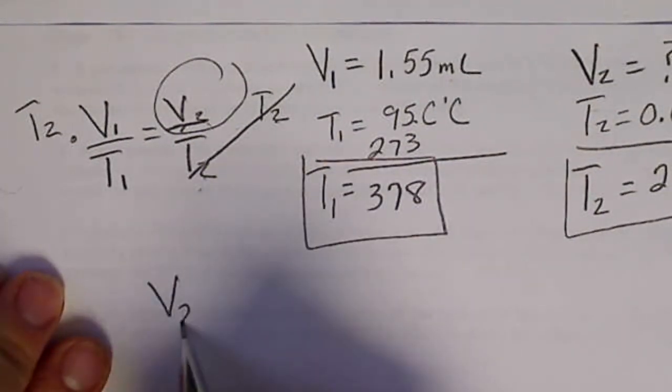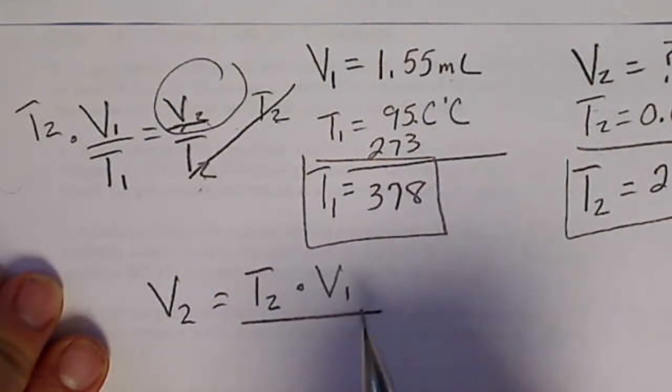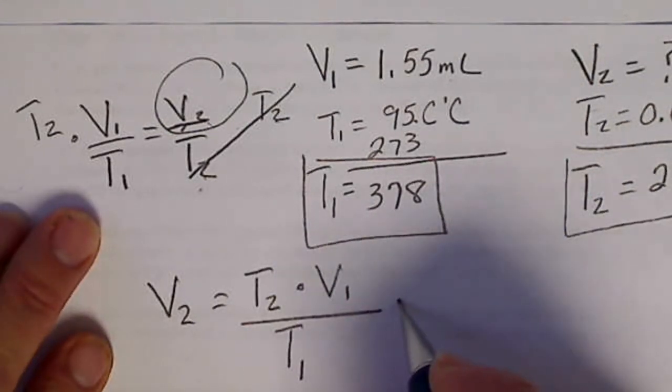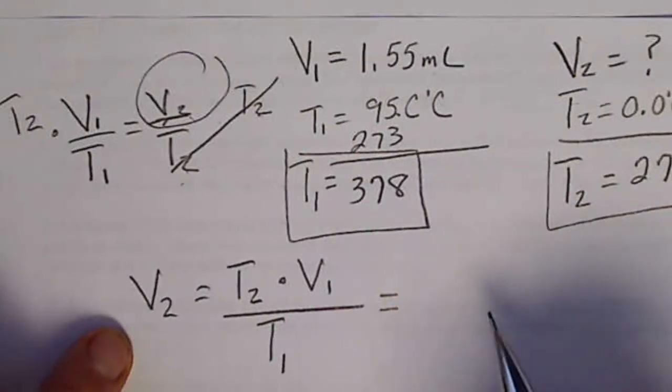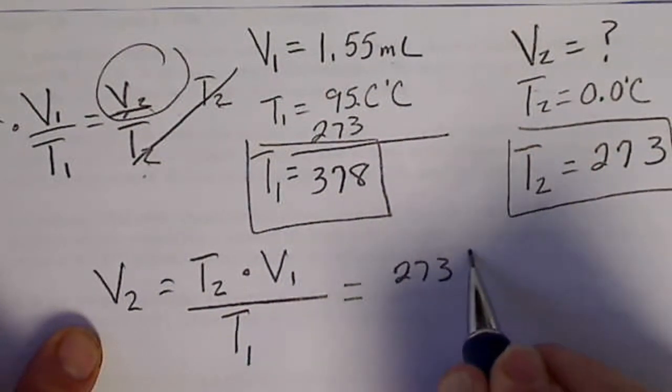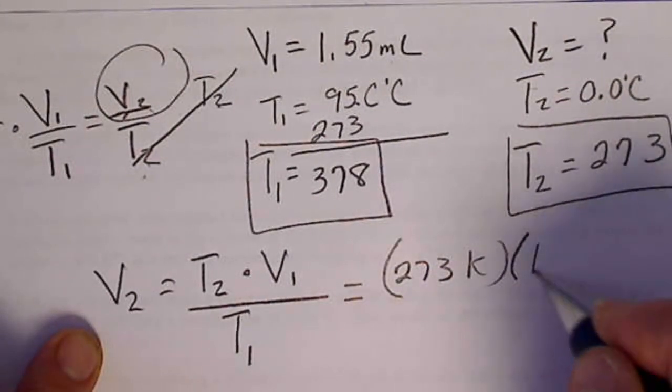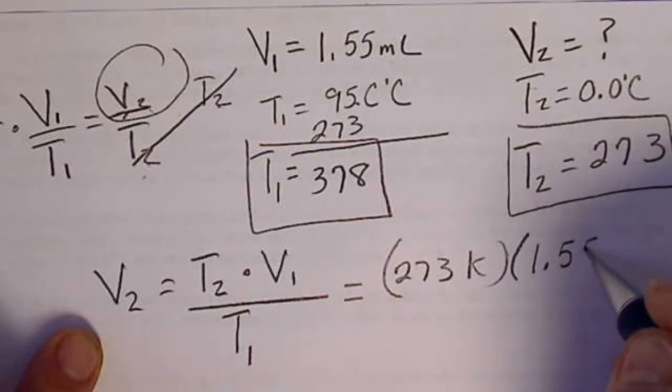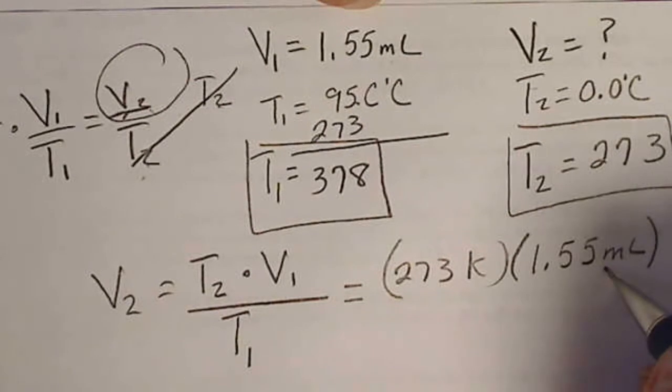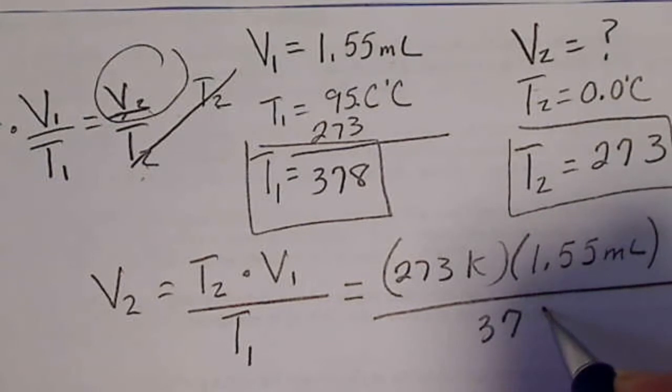So V2 is equal to the second temperature times the first volume divided by the first temperature. Here we've just got to make sure that we don't put things in the wrong place. T2 is 273, and that's in Kelvin. Our volume can stay in milliliters, so we are not required to change the volume. So we put V1 right here, and then T1, the 378, goes in the denominator.